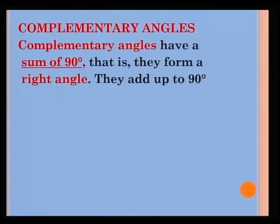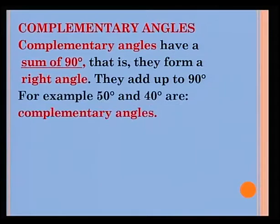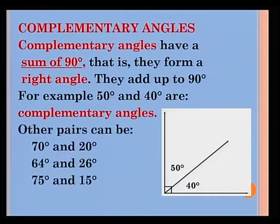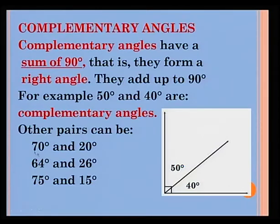Complementary angles have a sum of 90 degrees — that is, they form a right angle. For example, 50 degrees and 40 degrees are complementary angles. Other pairs can be 70 degrees and 20 degrees, 64 degrees and 26 degrees, 75 degrees and 15 degrees. You will notice that the sum of each pair gives you 90 degrees. Therefore, they are complementary angles.